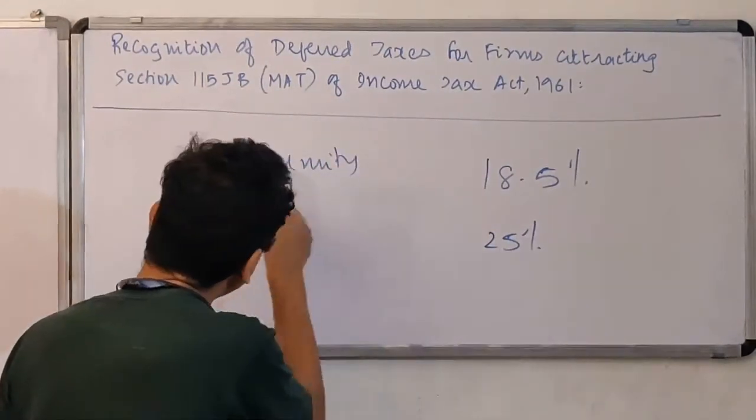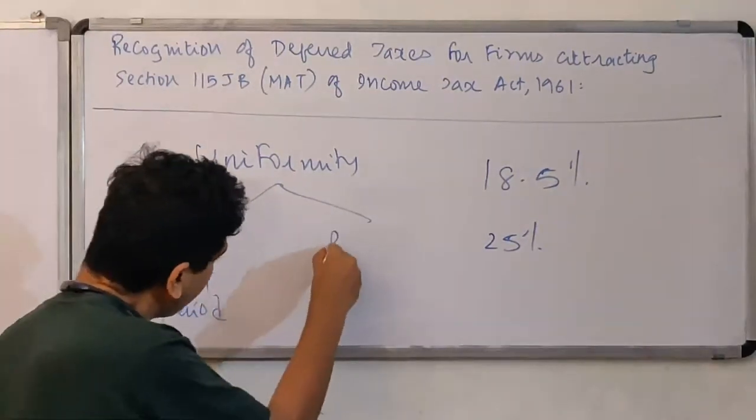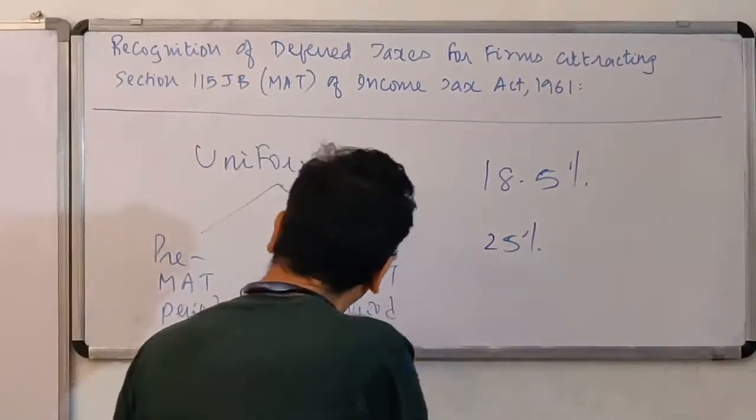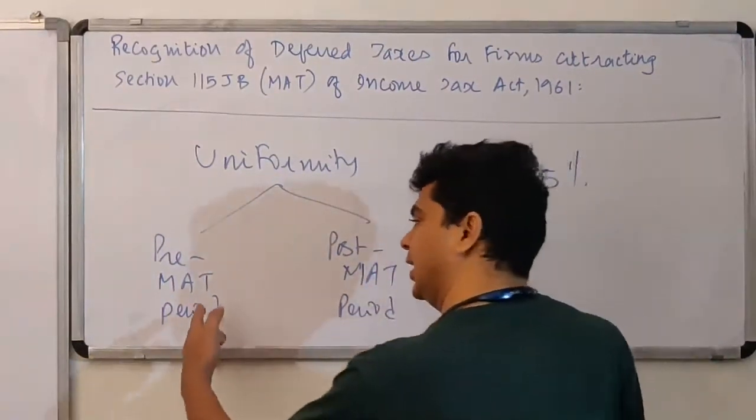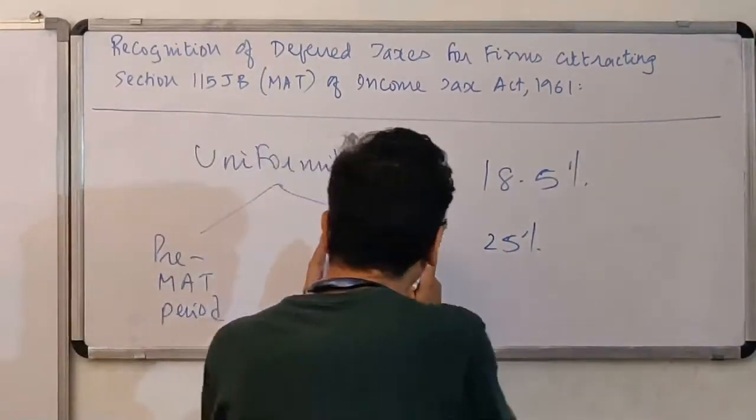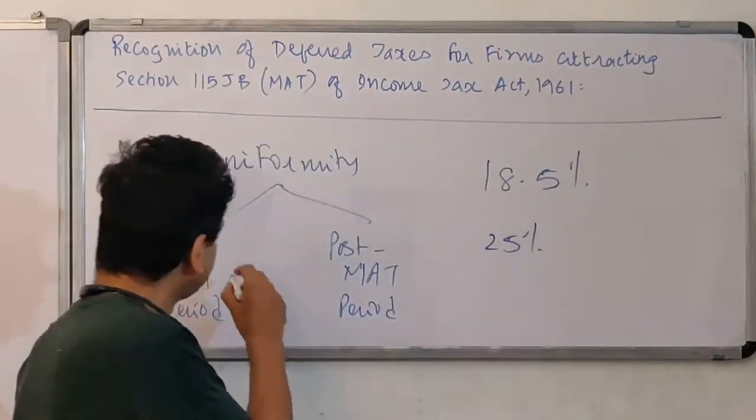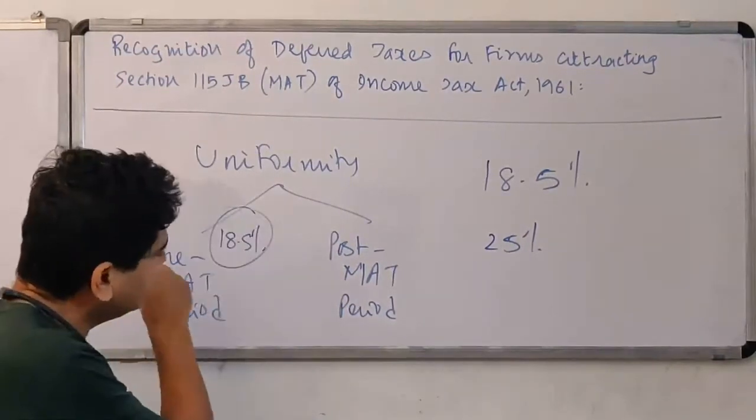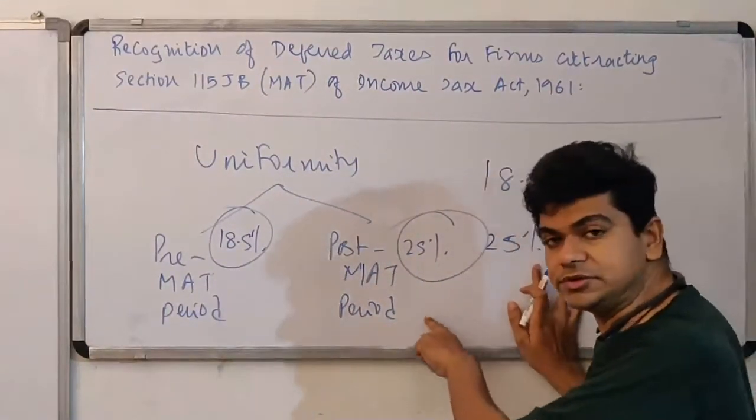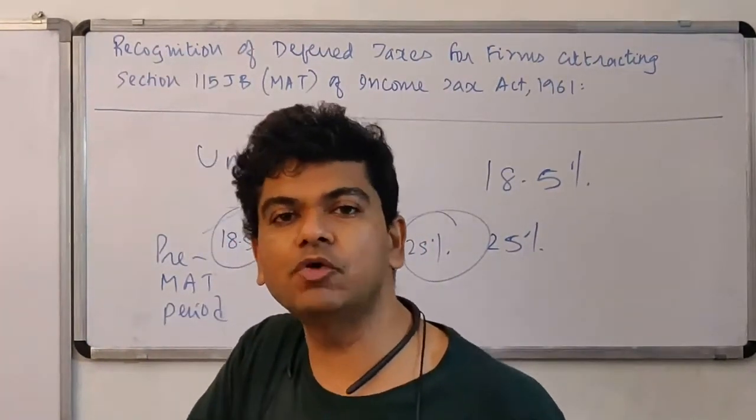We want to ensure uniformity between pre-MAT period and post-MAT period. We don't want a situation where in the pre-MAT period we are using one particular tax rate and after the MAT period is coming to an end we are using another tax rate. So we don't want that deferred taxes are calculated at 18.5% here and once that period ends then I start calculating at 25%. We don't want to do this.